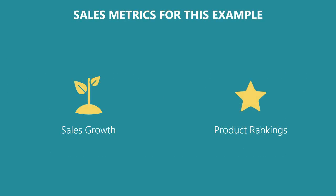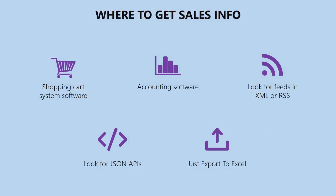We can't fit all of those into this one short video, so we're going to work with two sales metrics for this example: one is sales growth and one is product rankings. The first step is to find out where in your organization the sales info is — where you can find out your sales figures or product rankings. Probably the best spot for this is your accounting software.